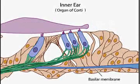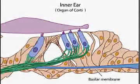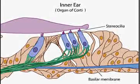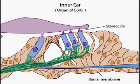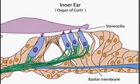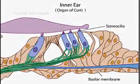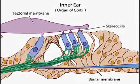From the upper end of each hair cell protrude relatively stiff, tiny hair-like structures known as stereocilia. Each hair cell has 50 to 200 stereocilia, and the heights of the stereocilia increase progressively across the hair cell, so that the tops approximate an inclined plane. Atop the organ of Corti is the tectorial membrane.